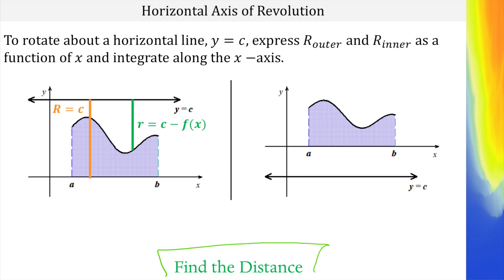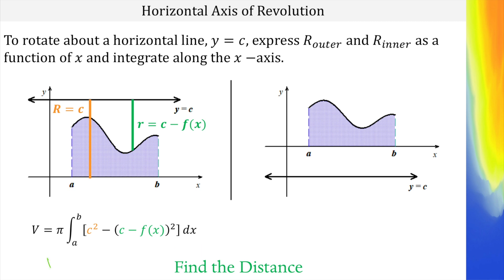This is very similar to what we were doing last time. Remember, the area of a circle is π r squared. So our formula here is pi on the outside, then our limits of integration, and then big R squared minus little r squared. We are integrating in terms of x.